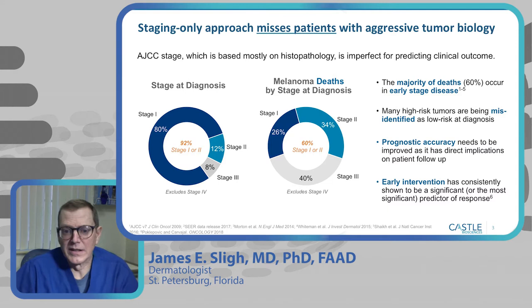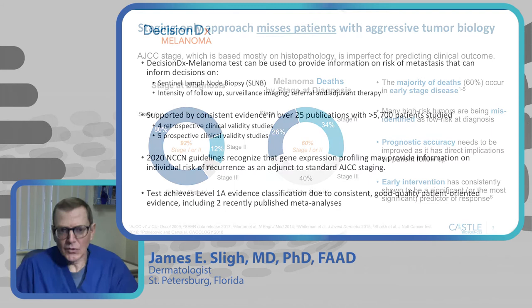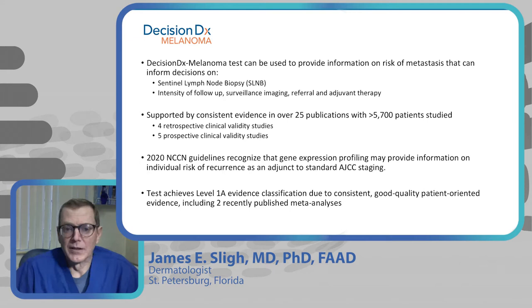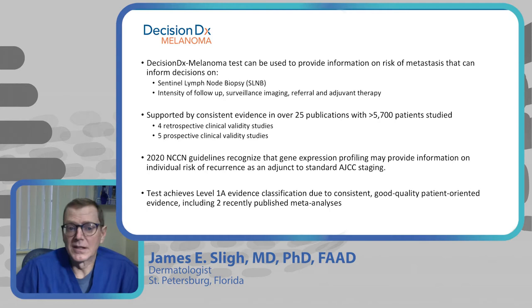Prognostic accuracy is important for managing any malignancy, and in melanoma it's been shown that early intervention improves outcomes. We're going to talk about a melanoma test called DecisionDx Melanoma. It is a gene expression profile test that uses genetic information extracted from the biopsy specimen, using RNA levels and looking at specific gene expression to help identify risk factors.